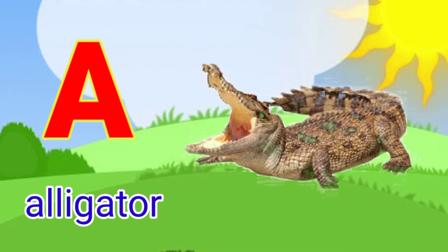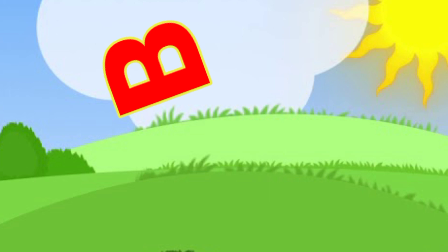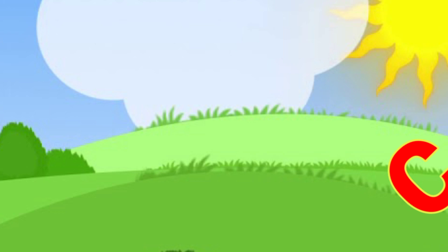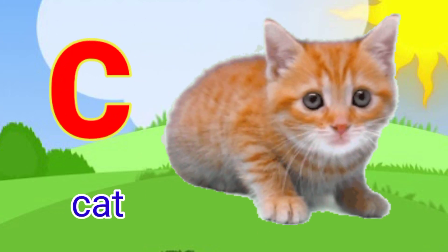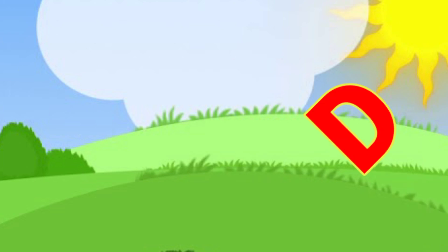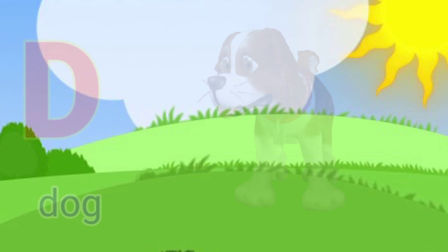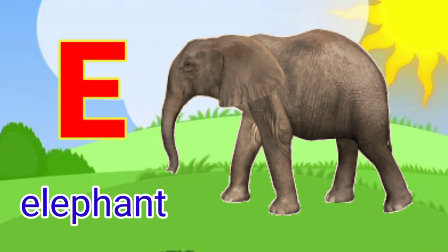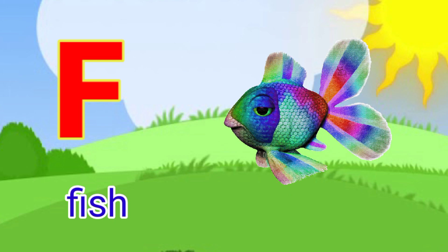A for Alligator. B for Peer. B for Cat. D for Dog. E for Elephant. F for Fish.